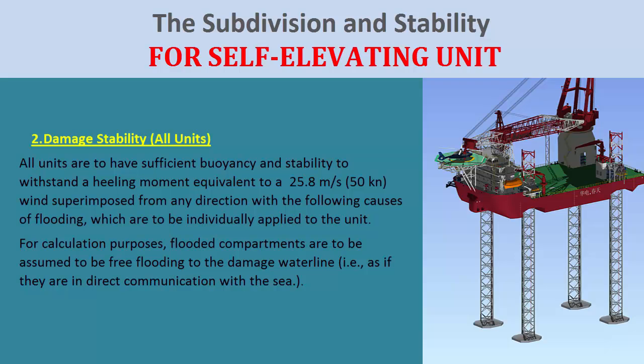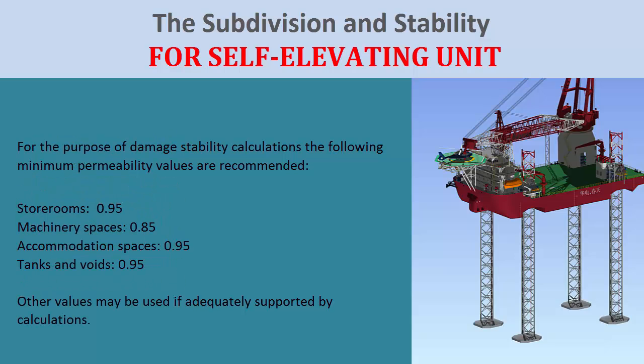Flooded compartments are to be assumed to be free-flooding to the damage waterline, i.e., as if they are in direct communication with the sea. For the purpose of damage stability calculations, the following minimum permeability values are recommended: store rooms 0.95, machinery spaces 0.85, accommodation spaces 0.95, tanks and voids 0.95. Other values may be used if adequately supported by calculations.